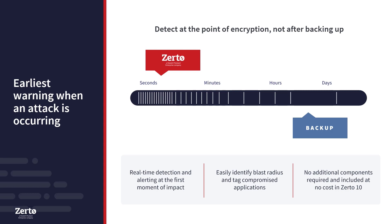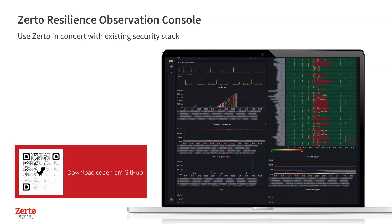Zerto's API-first approach means that Zerto works seamlessly with everything else you are already running in your security stack, allowing your security teams to integrate security solutions. Along with Zerto's detection, you can leverage the Zerto Resilience Observation console so you can use Zerto in concert with your existing security stack.